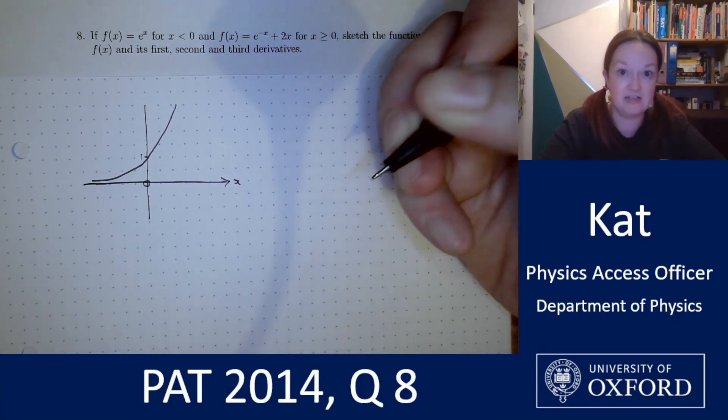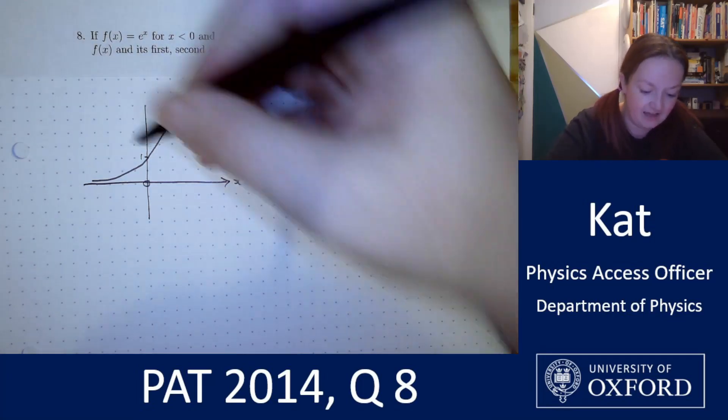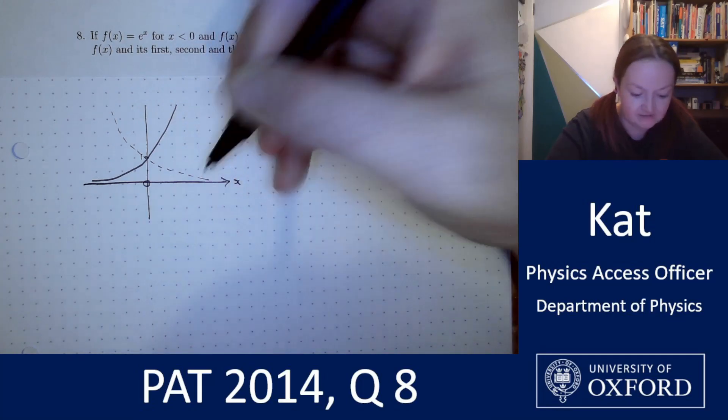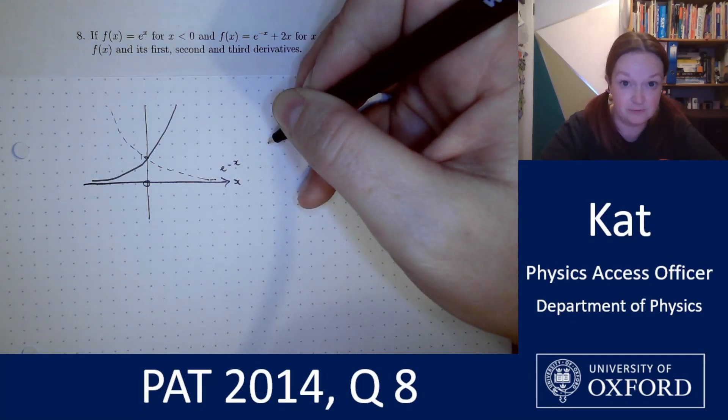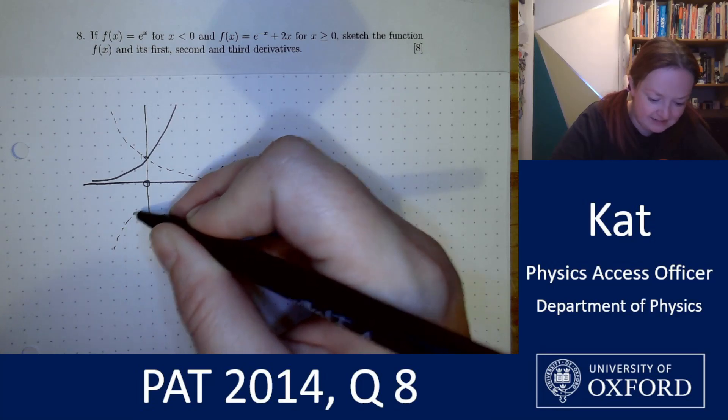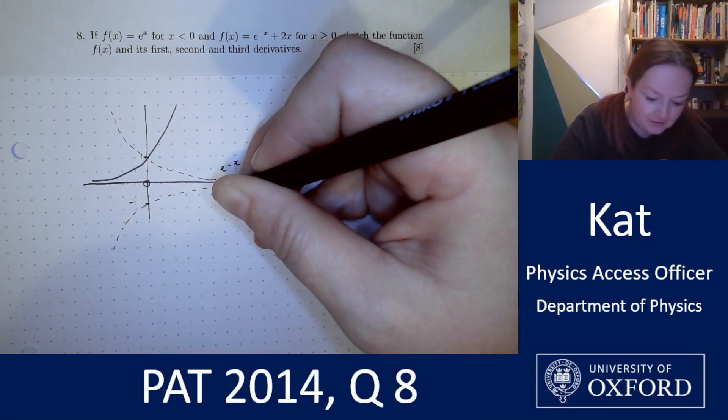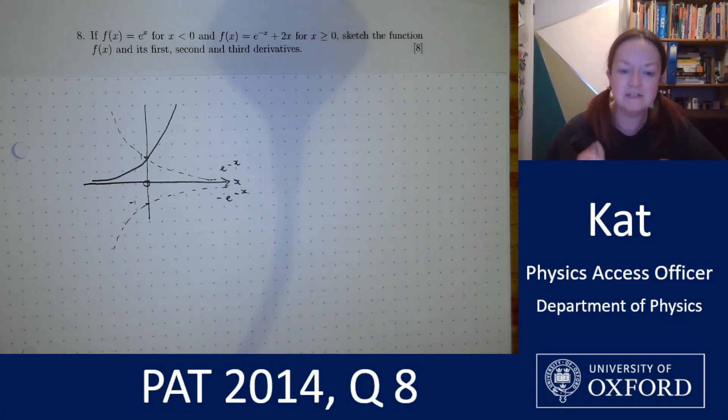I know that f(x) is equal to e to the negative x is the reflection of that, that passes through the point zero negative one and I think that's probably all I need to know to start me off. That's a really good start.